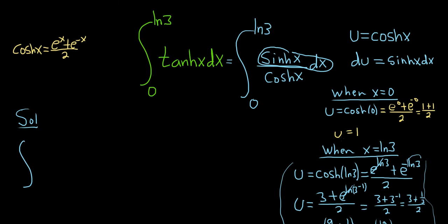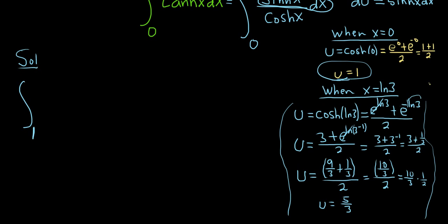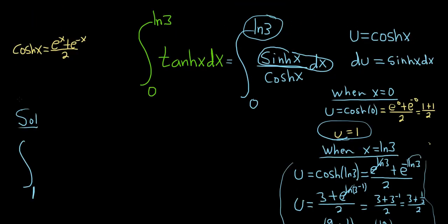So when it was 0, it became 1. And when it's ln 3, it became 5 thirds. So I'm going to go ahead and replace that with 5 thirds. And then this piece here that's circled is our du, and on the bottom we have u. Beautiful problem. This is a familiar formula, hopefully. This is the natural log of the absolute value of u. And we're going from 1 to 5 thirds.